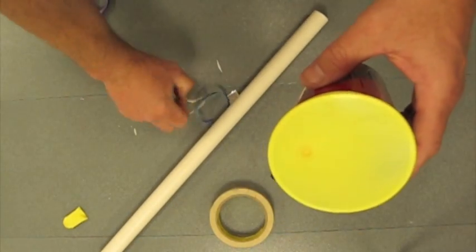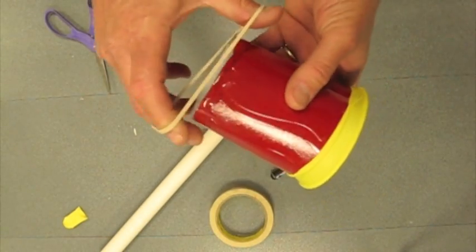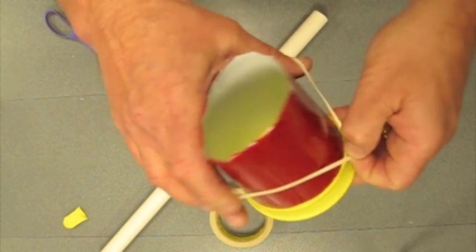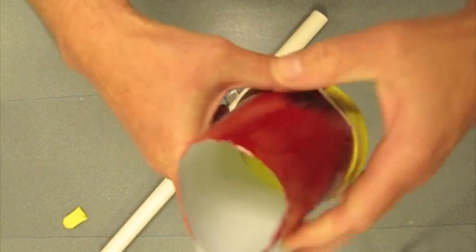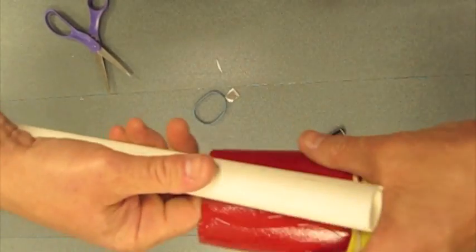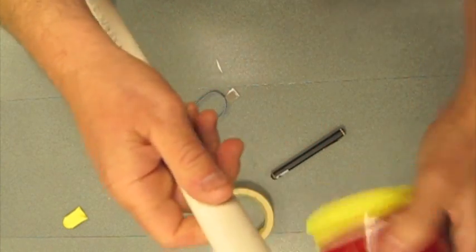Next, what you're going to do is you're going to put a rubber band or two around the stick in the membrane.